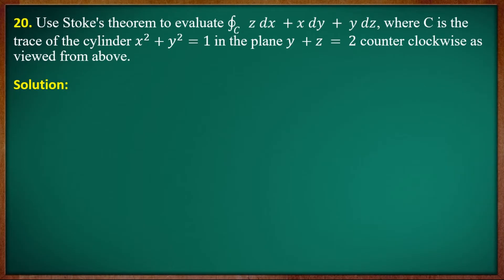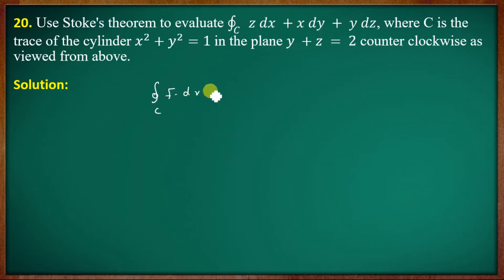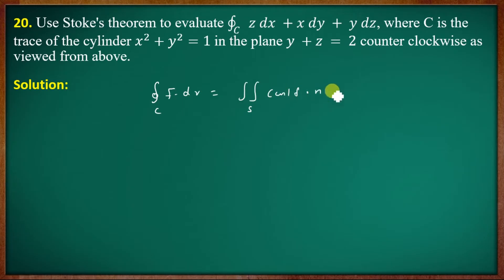Stokes' theorem states: the line integral over C of F · dr equals the double surface integral over S of curl F · n dS.